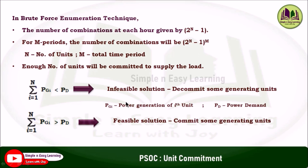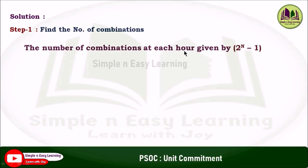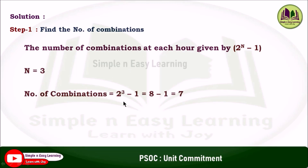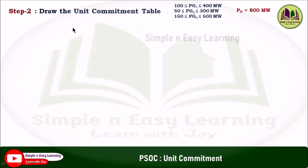Step one: find the number of combinations. In this problem there are three units, so the number of combinations at each hour is given by 2 power n minus 1, where n is 3. So combinations will be 2 power 3 minus 1, which is 8 minus 1, that is equal to 7. So the number of combinations equals 7.